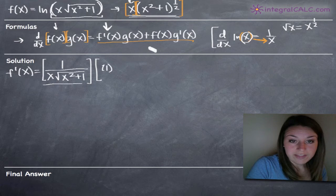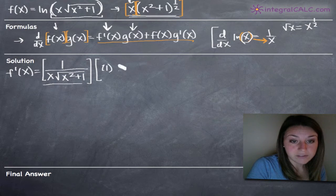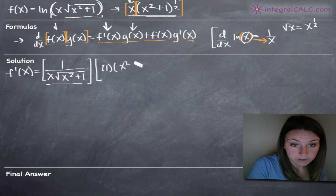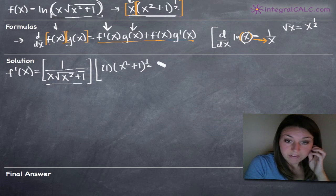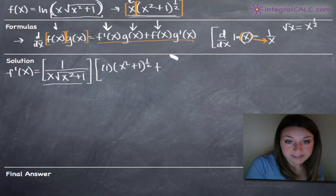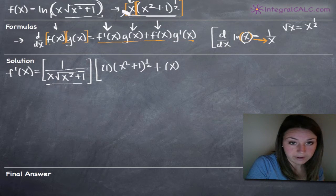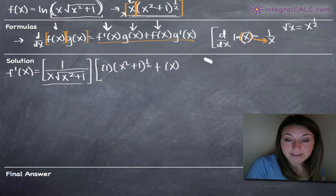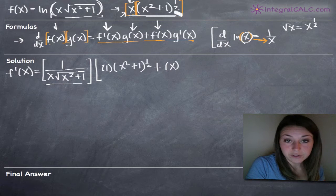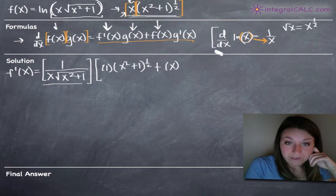We write 1 and then multiply by g of x without doing anything to it, which is x squared plus 1 to the 1/2. Then we add f of x as it is — so we write that x in again — and then multiply by the derivative of g of x. And g of x is the quantity x squared plus 1 to the 1/2.